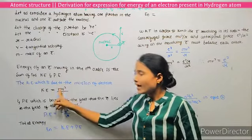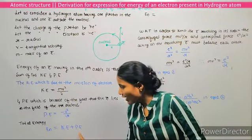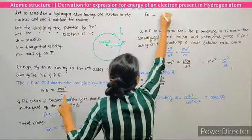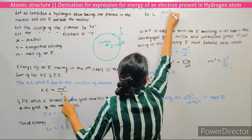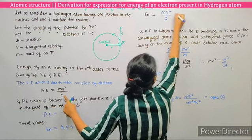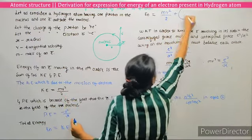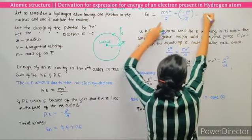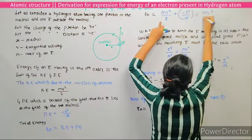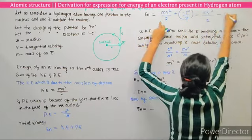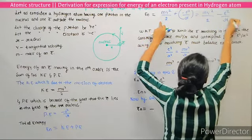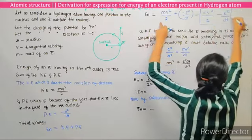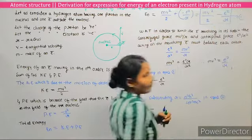Substituting the kinetic energy and potential energy values: En = mv²/2 + (−e²/r), which gives En = mv²/2 − e²/r. Let us call this equation number one.